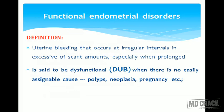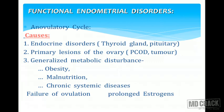Functional endometrial disorders are defined as uterine bleeding occurring at irregular intervals, in excess or scant amounts, especially when prolonged. It is called dysfunctional uterine bleeding (DUB) when there are no assignable causes — once you rule out endometrial polyps, endometrial carcinoma, or pregnancy, only then can you call it dysfunctional uterine bleeding. The most important causes are anovulatory cycles.